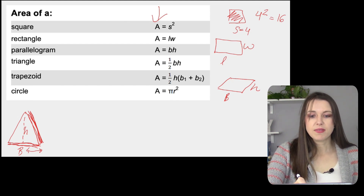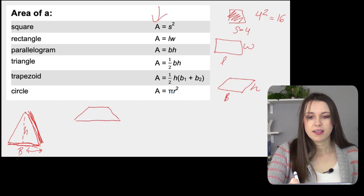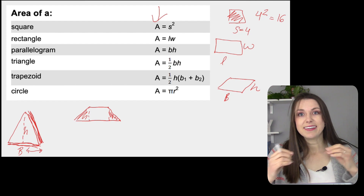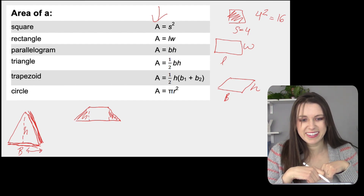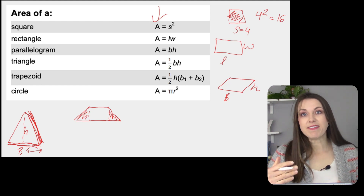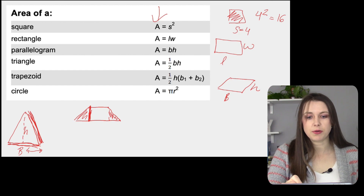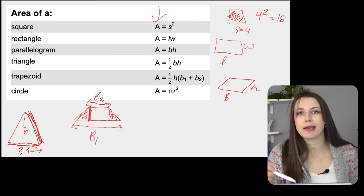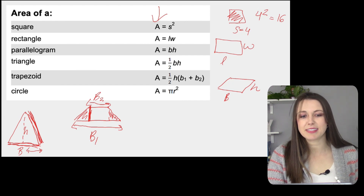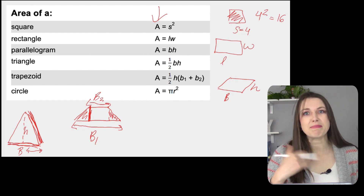Trapezoid — this is what a trapezoid looks like. It has the word 'trap' in it, so I like to think we have two triangles that have trapped in a rectangle. The formula is one half times the height — and the height, like with our triangle, goes straight up and down — times base one plus base two. Base one is the bottom and base two is the top.